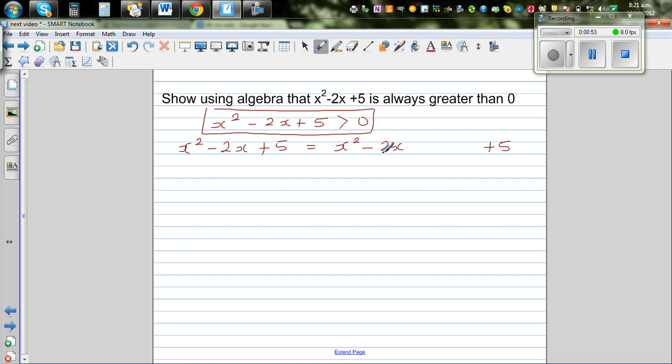Now to complete the square, what we do is take half of negative 2, which is negative 1, and then square it. If you add 1 here this will become a perfect square, and then immediately you take away 1. This becomes a perfect square of (x - 1)² and this becomes plus 4.